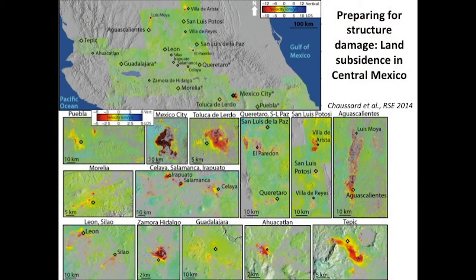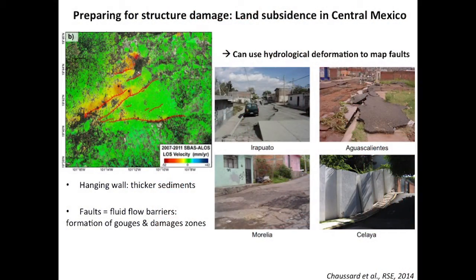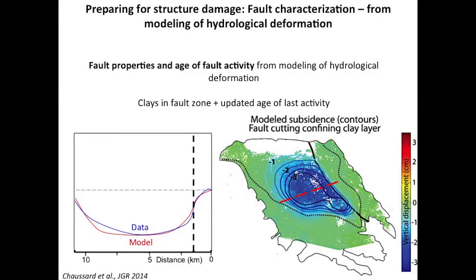When we look at hydrology in other places, we find a lot of other signals. This is the example of Mexico, where we find subsidence due to groundwater pumping almost everywhere. This can be done with InSAR because we have a lot of spatial coverage — basically, we can look anywhere. What we learn in Mexico is that we can also use the hydrological deformation to map faults, because the faults control the partitioning of the hydrological deformation. High gradients can result in very large damage in the area. You can also learn more about your faults by modeling the hydrological deformation — learning the properties and the age of activity, and how shallow your faults need to come in the sediment section.